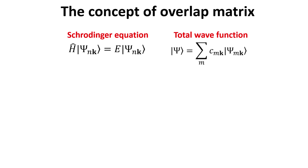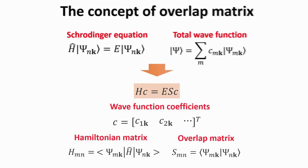Before proceeding further, we introduce the concept of the overlap matrix and clarify how it relates to our discussion. A practical method to solve the Schrödinger equation is to rewrite it in matrix form. To accomplish this, we write down the total wave function as a linear combination of the non-orthogonal Bloch states psi of m and k. Combining the two equations, we obtain a matrix equation to determine the set of wave function coefficients as well as the energy eigenvalues. The matrix equation is highlighted in the orange box, where the wave function coefficients are organized in a column vector and the Hamiltonian in the non-orthogonal Bloch basis is a square matrix whose elements are given below.